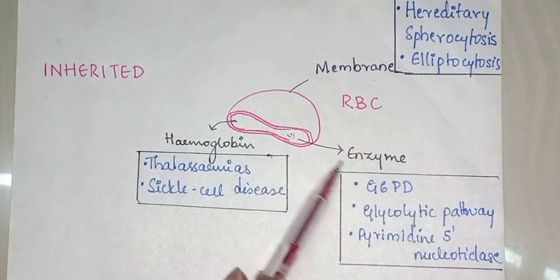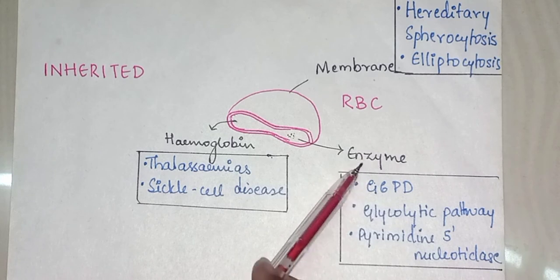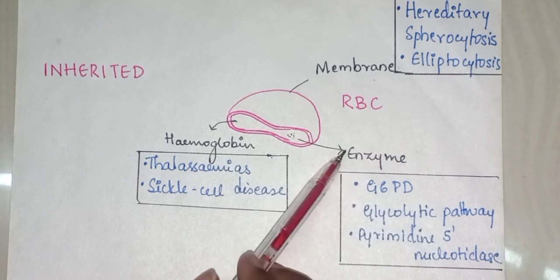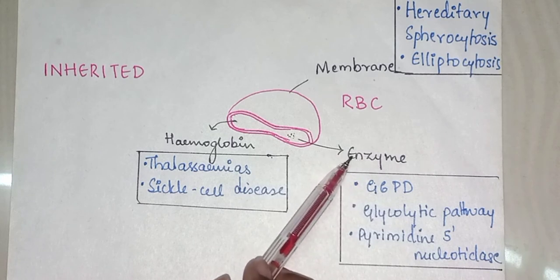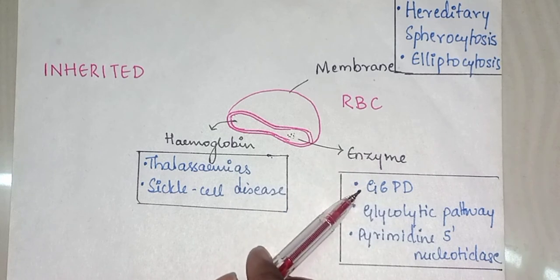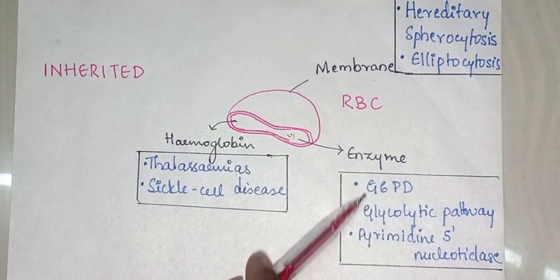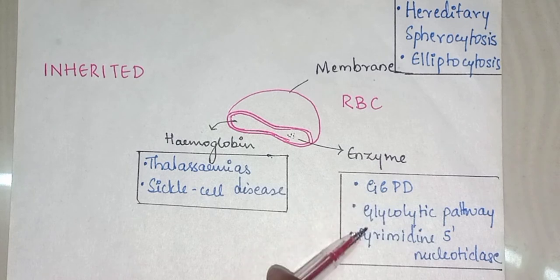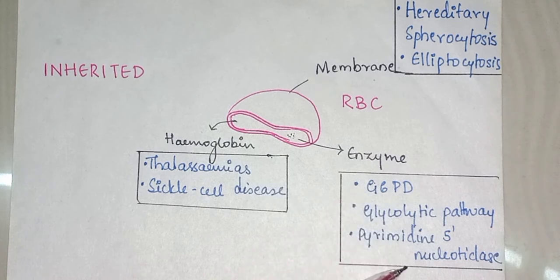If there is some deficiency of any enzyme, it might lead to hemolytic anemia. Enzymes such as G6PD, glycolytic pathway enzymes, or pyrimidine 5-nucleotidase — deficiency of these enzymes will lead to hemolytic anemia.